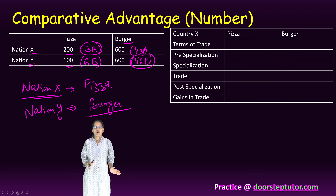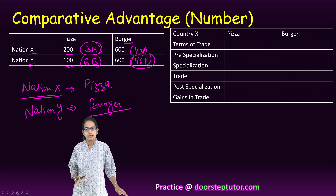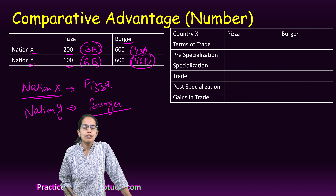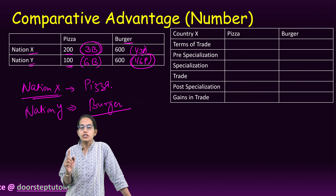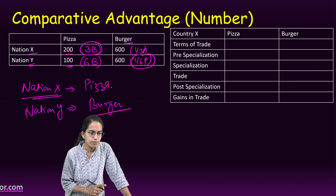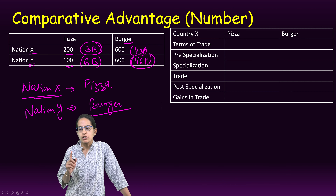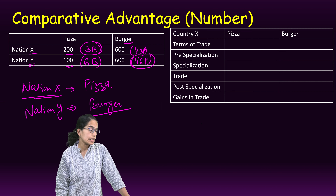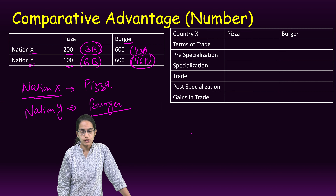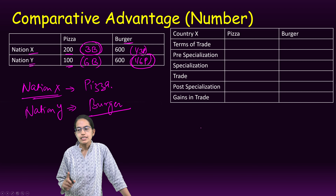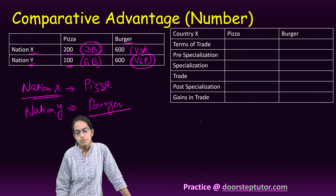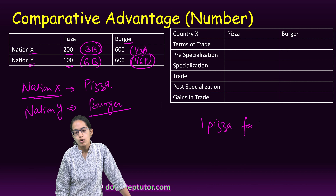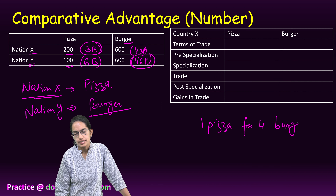The value 3 is smaller for nation X, and 1/6 is smaller for nation Y. So nation X would specialize in pizza and have comparative advantage in pizza, and nation Y would have comparative advantage in burger. That's the first part — finding comparative advantage by calculating opportunity cost. The second part was identifying which nation would specialize in what.